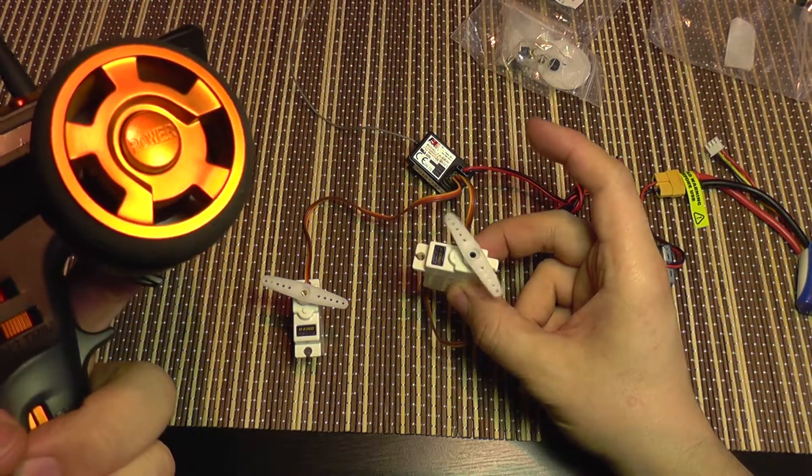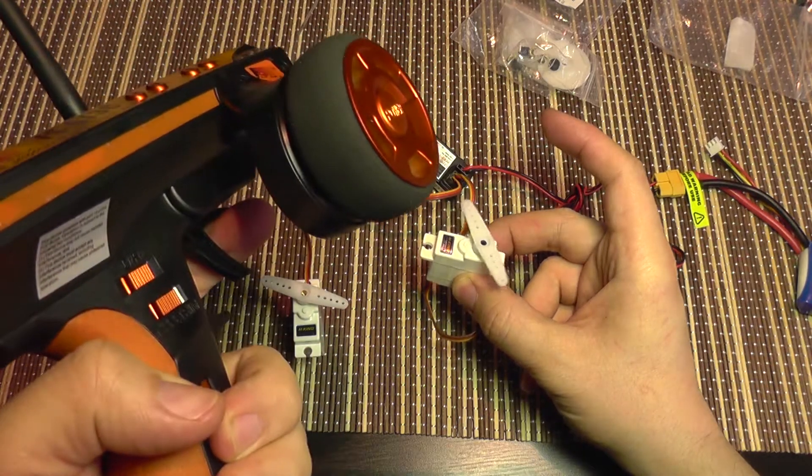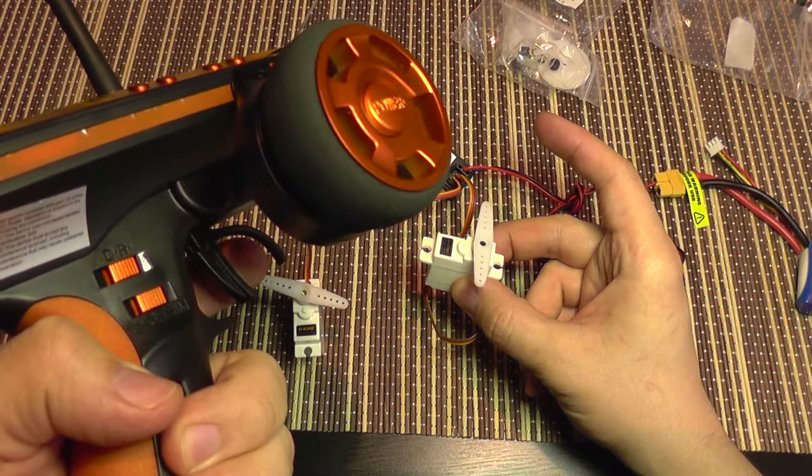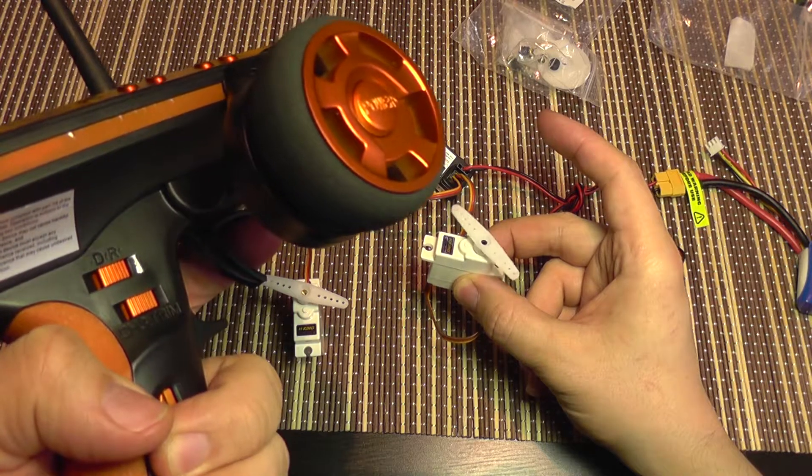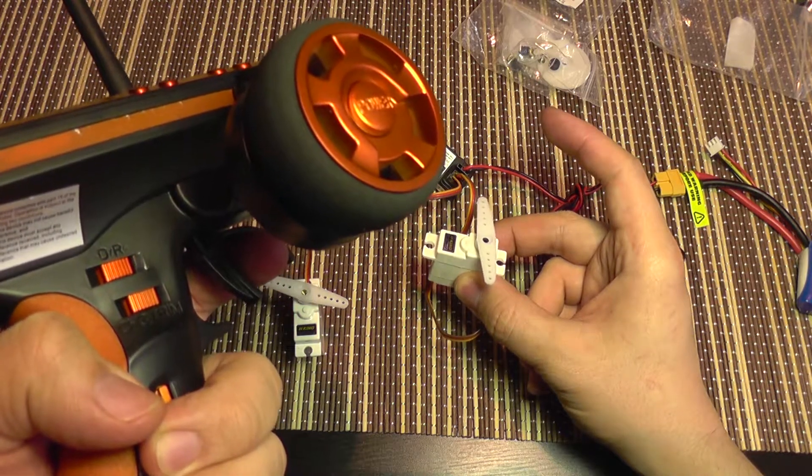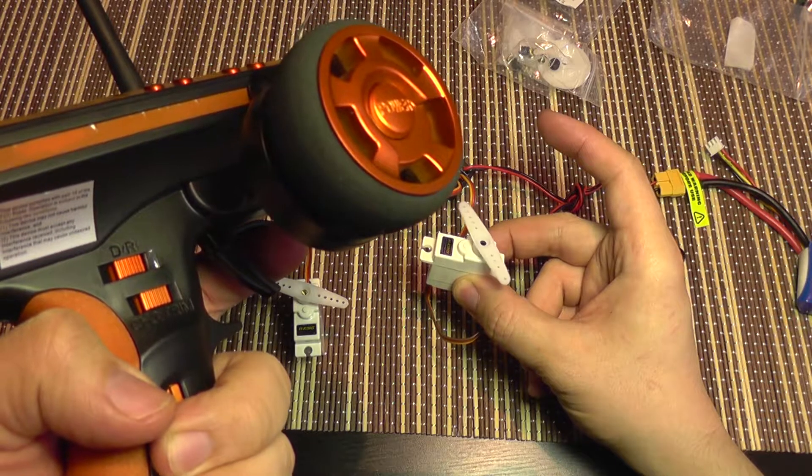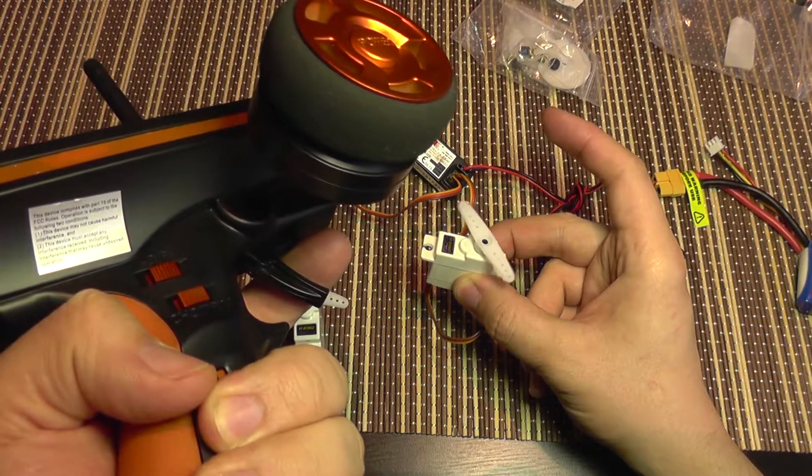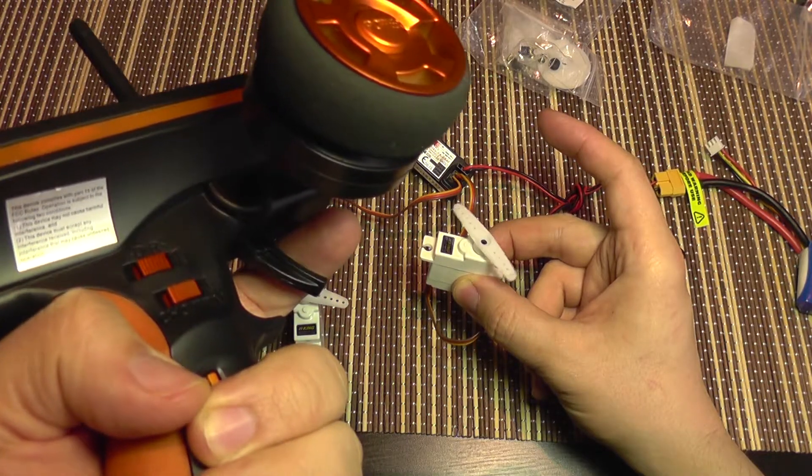You can see my finger is steady. So throttle and brake. And it's also progressive. You can see the intensity of pulsing varies with my finger.